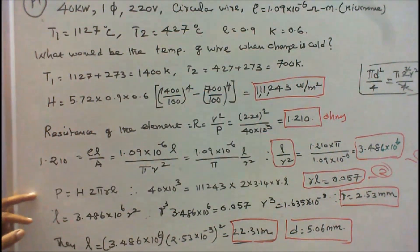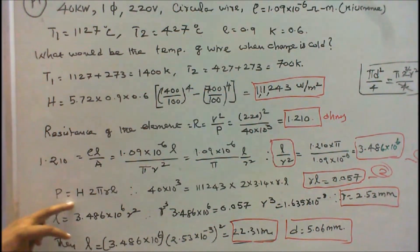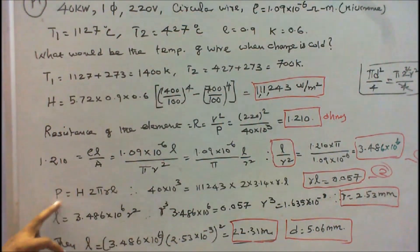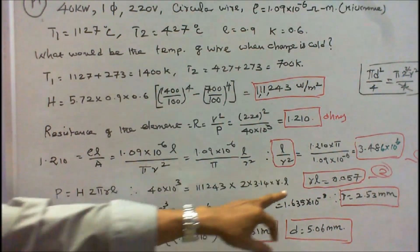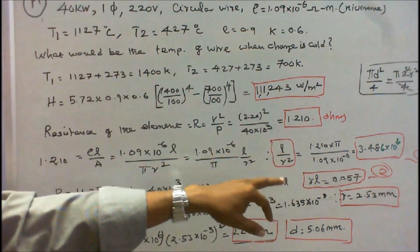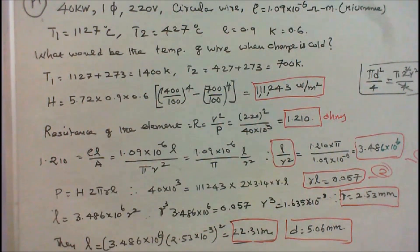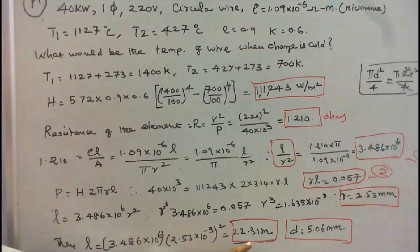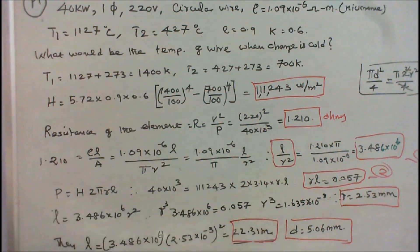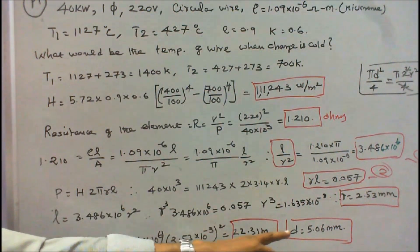Under thermal equilibrium condition, input power equals H multiplied by surface area. The surface area of the circular wire equals 2πR times L. Substituting into the formula gives R times L equals 0.057. Solving these two equations simultaneously gives L equals 22.31 meters, R equals 2.53 mm, and diameter D equals 5.06 mm.